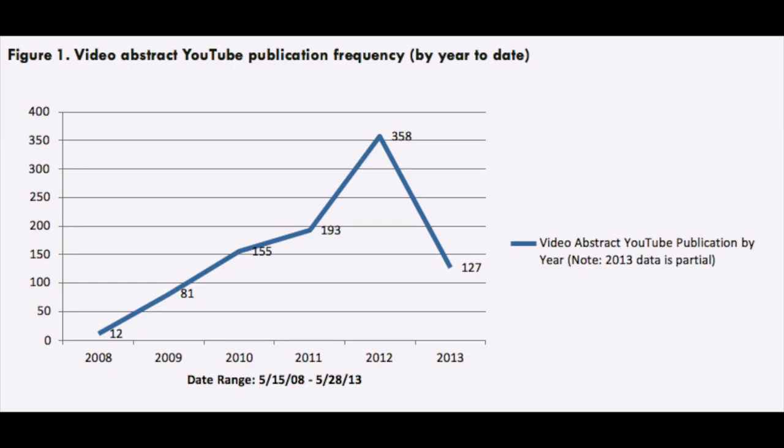For the second research question, I ran the Spearman Rank test to correlate video abstract view counts on both the NJP website and NJP YouTube channel, correlated with the readership usage of the corresponding article. Though still very early, the data captured from the 20 science journals on YouTube suggest that the publication trends have sustained consistent annual growth.